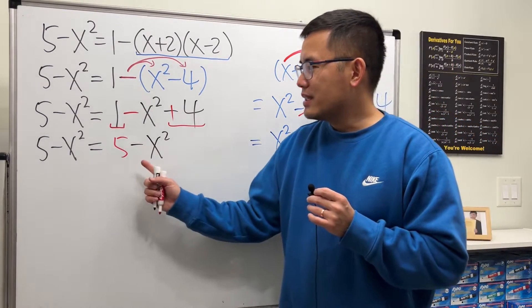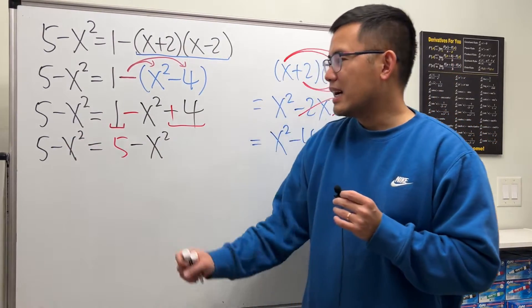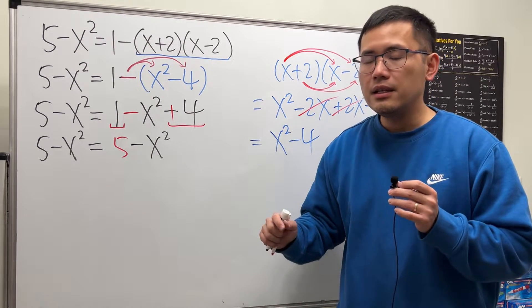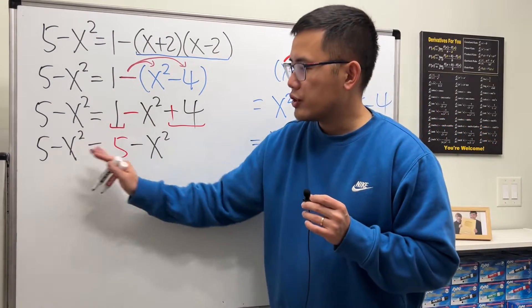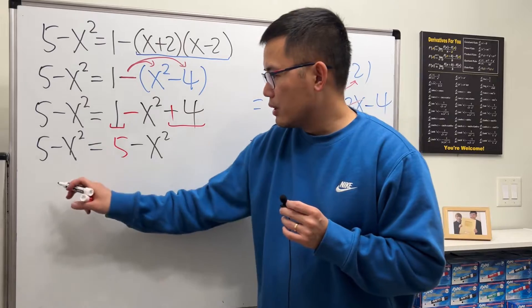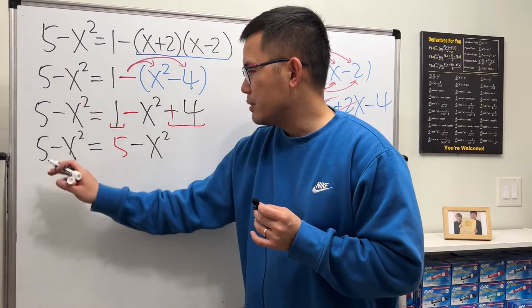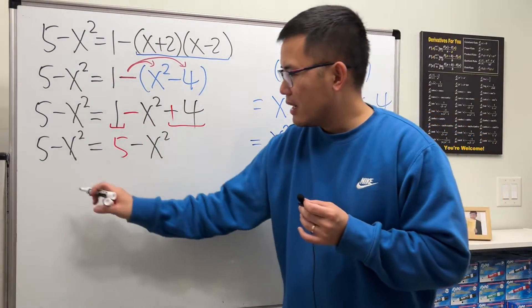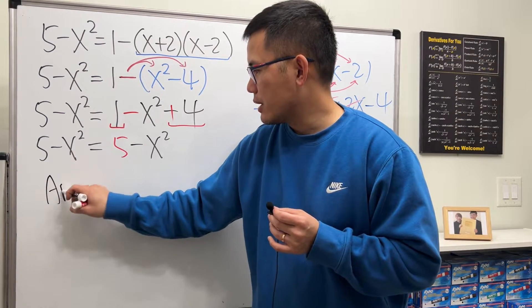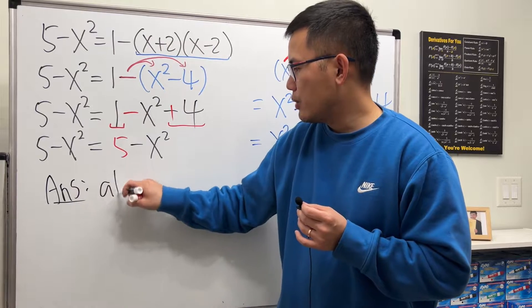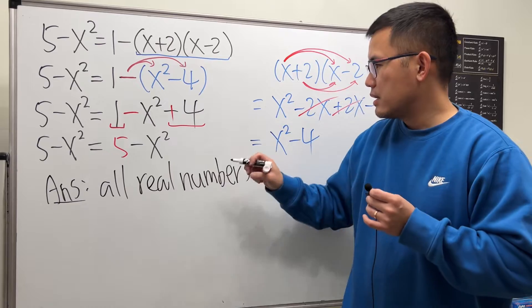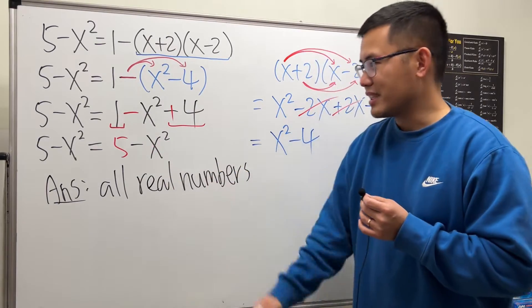As we can see, the left-hand side is exactly the same as the right-hand side. This is called an identity, meaning the expression is true for all x values. You can stop right here, because they are exactly the same, and say the solution is all real numbers.